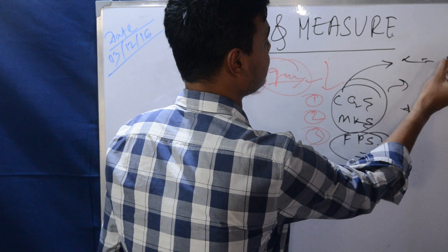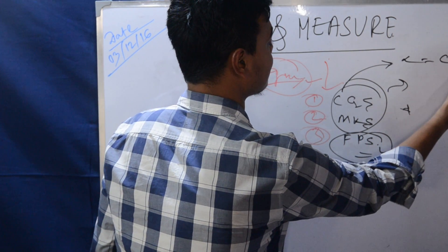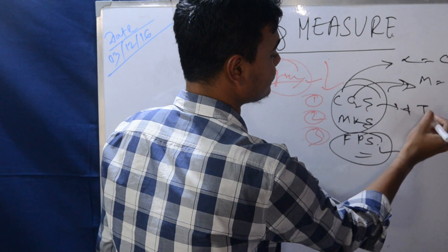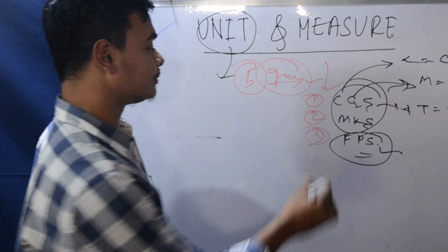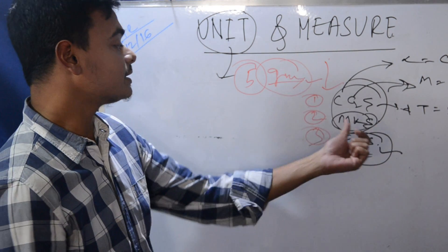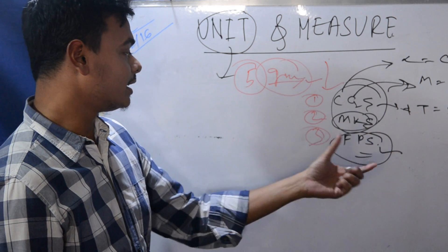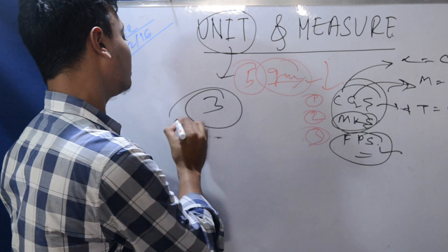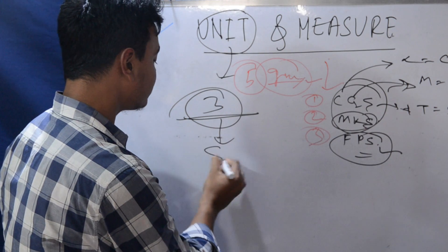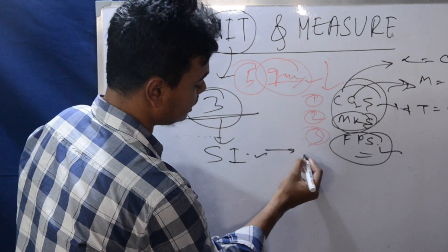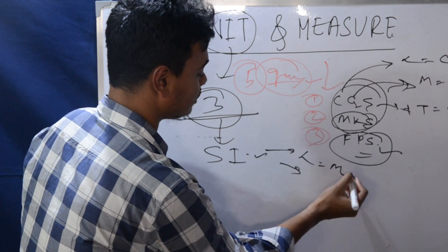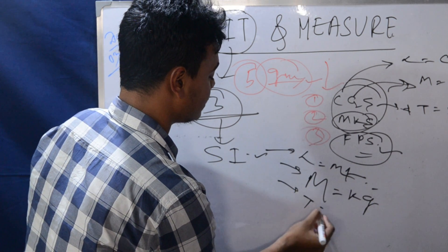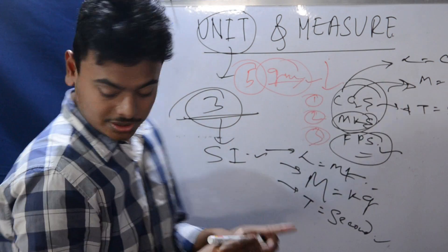In CGS: length is centimeter, mass equals to gram, and time is second. In MKS: that is meter, kilogram, second. And next is FPS: foot, pound, and second. But now we are following SI.